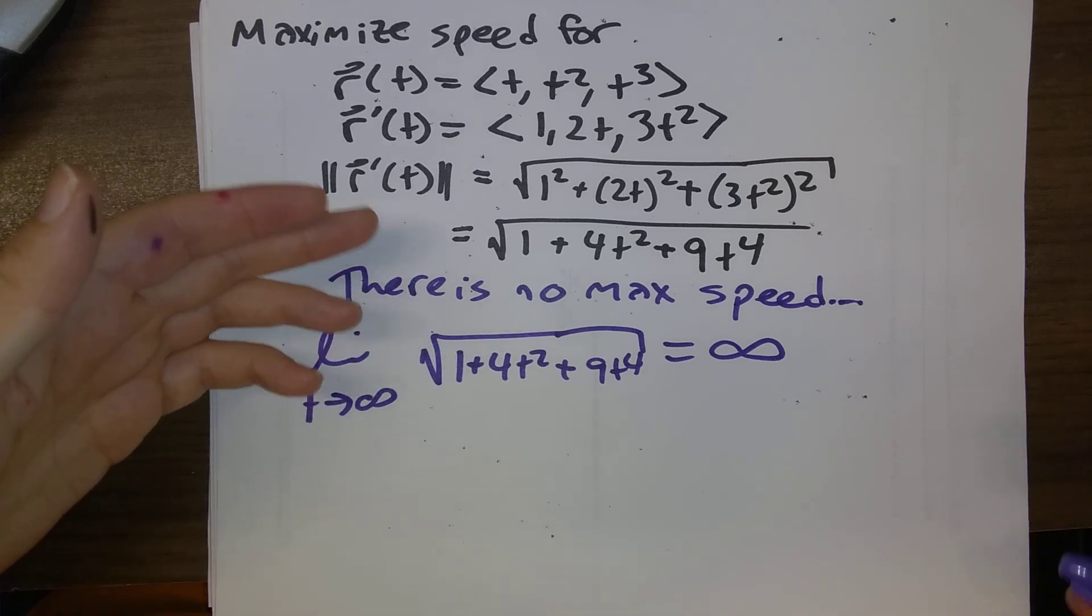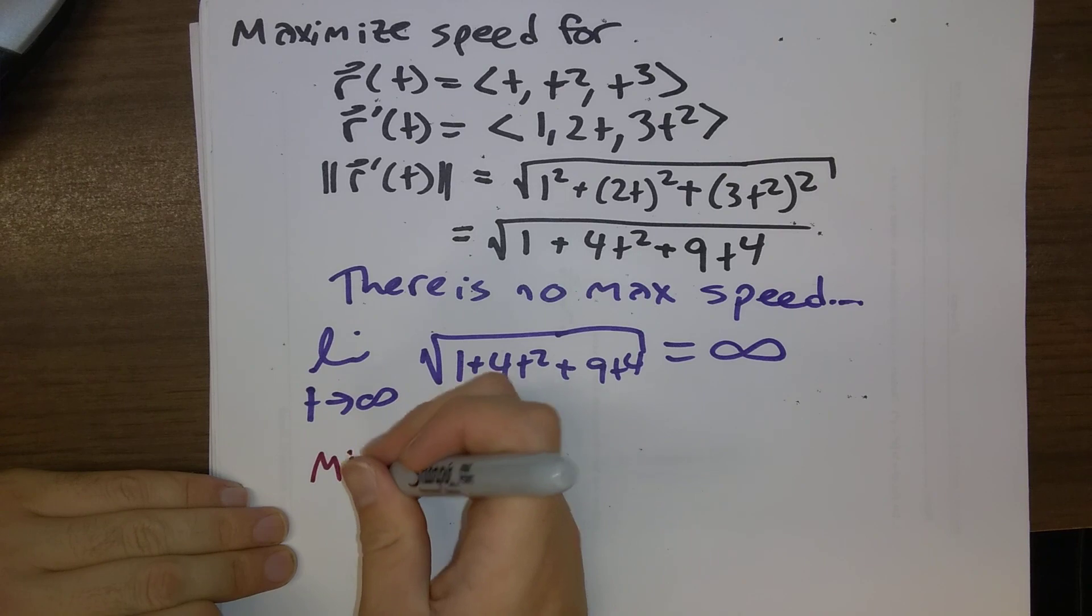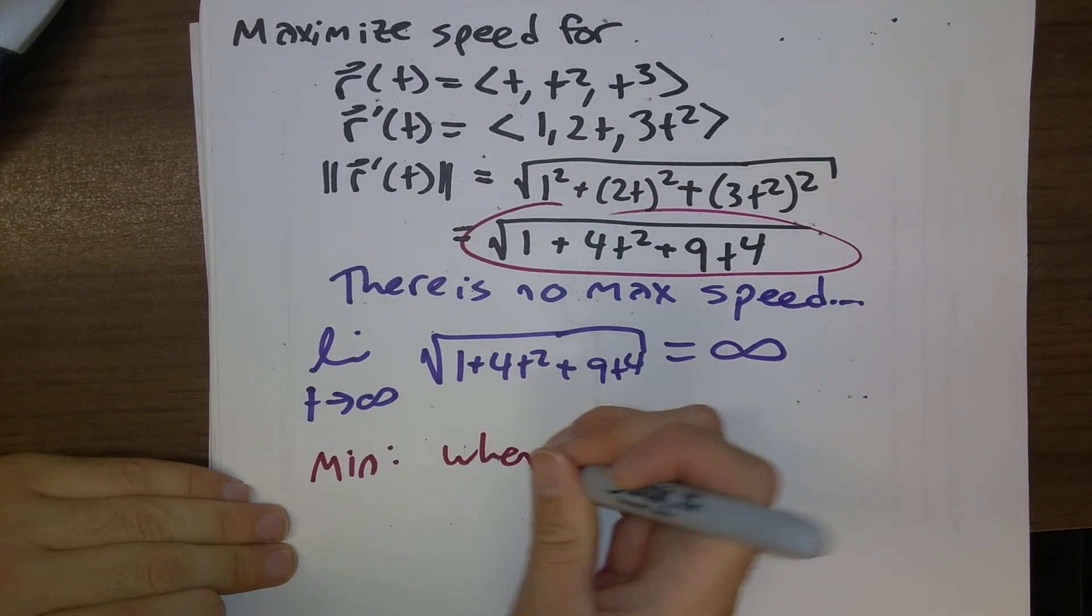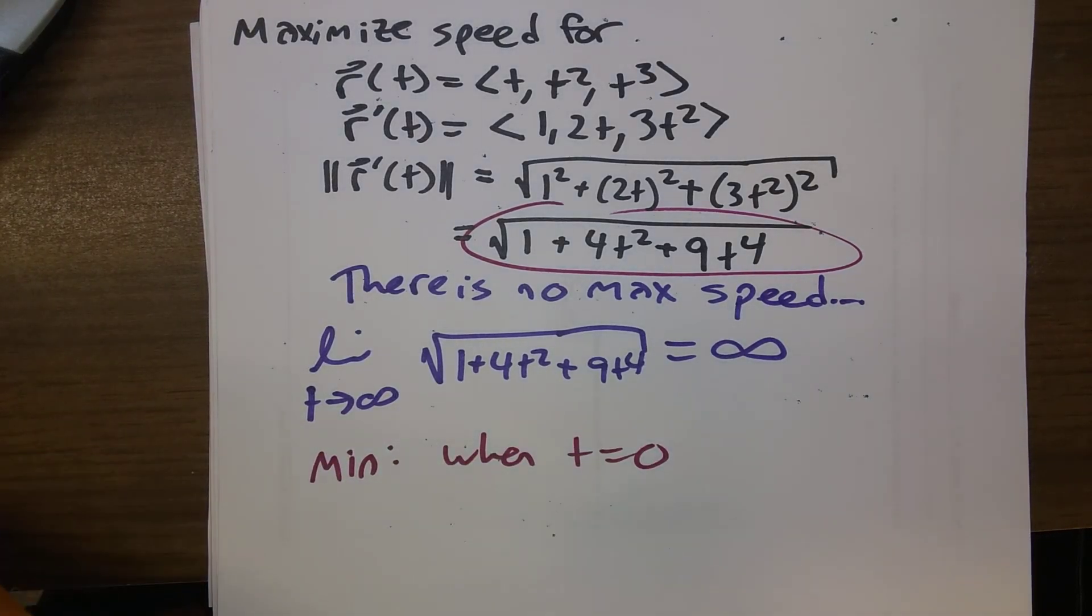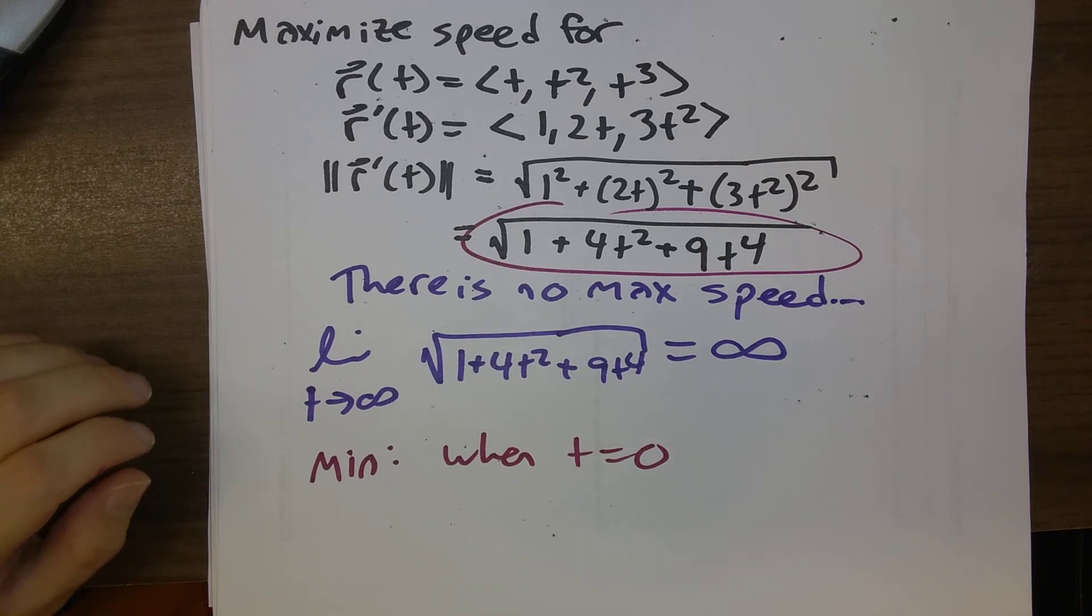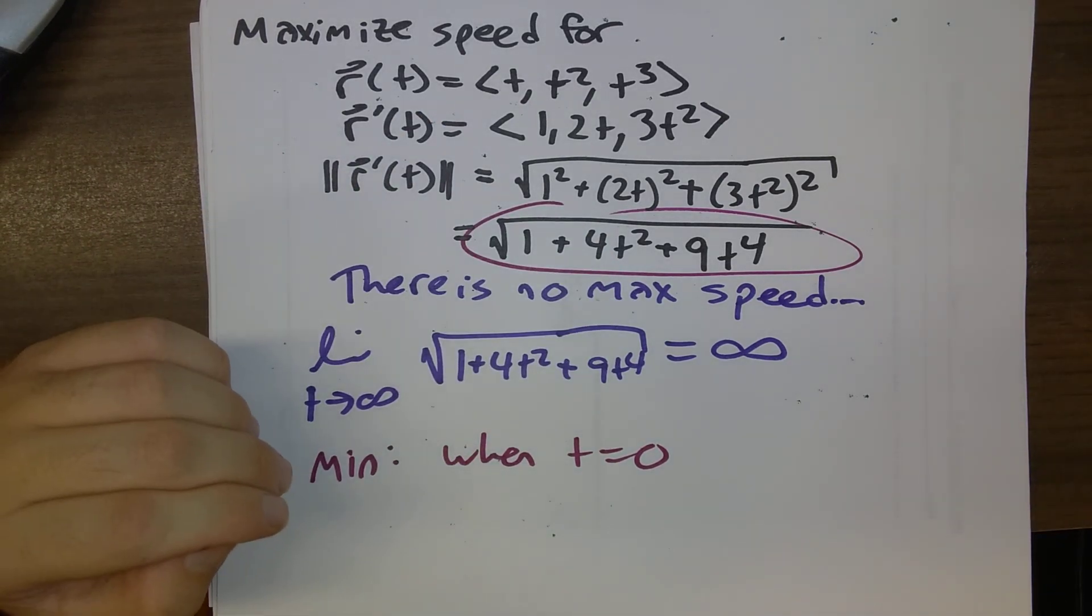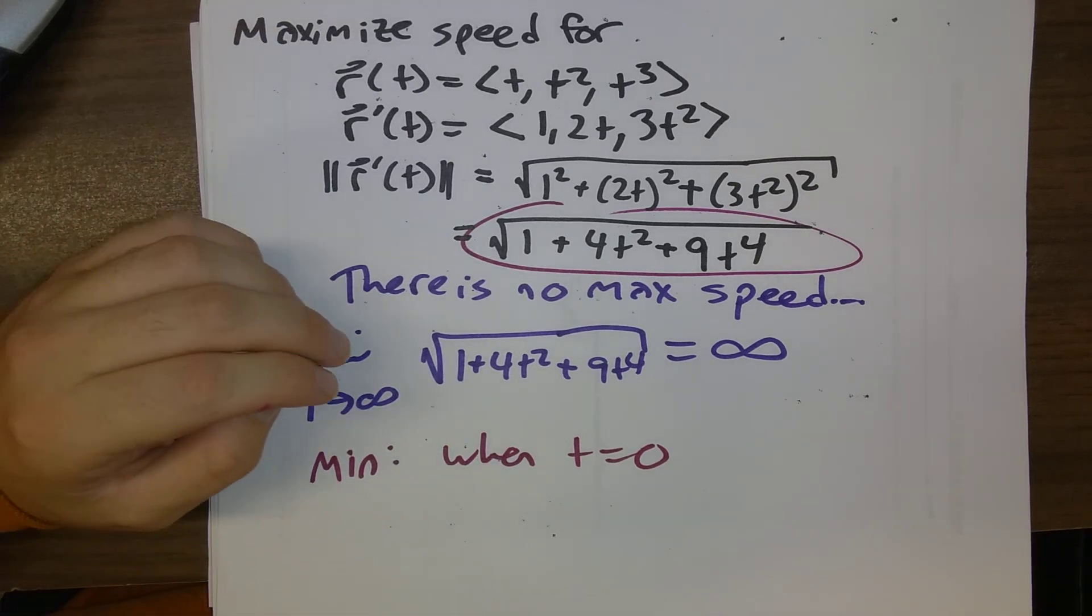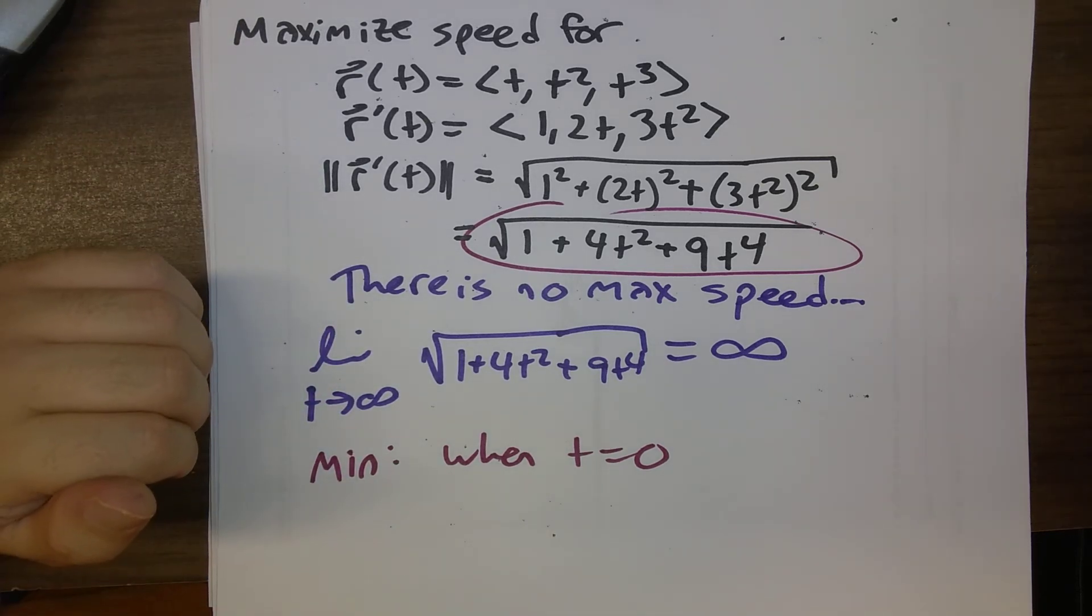If, instead, we want to minimize the speed, let's try to salvage the problem. Minimize the speed. It's not too hard to see that that is minimized when t is equal to 0. If it wasn't something that you could instantly see, in any case, if I ask you about the max or the min speed, this just becomes, essentially, a calc 1 problem. How do you minimize or maximize a function of one variable? That's all we're doing here. Thank you.